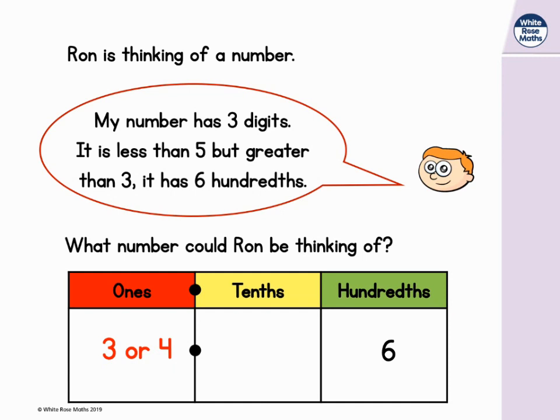So we could have three or four in the ones column. And in the tenths column, we could have any number of tenths from zero all the way to nine. Why can't you put a five in the ones column? If we put a five in the ones column, there would be five ones and six hundredths. And this number is greater than five, so we can't put five in the ones column.